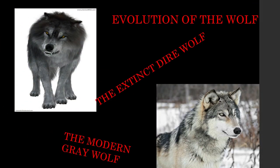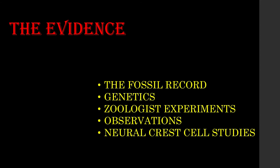The wolf evolved from previous ancestors, as demonstrated in the previous slide, using the same biological process of small changes over time as studied in microevolution. Please note, as you look at this picture, how different the extinct dire wolf is to our modern grey wolf. There are differences, and these differences can be explained by looking at how change occurs in the gene pool — and in this video we have looked at how change occurs, and it does not involve magic. Let us now summarise the evidence contained within this video for the evolution of the dog from an extinct wolf, looking at the fossil record, genetics, zoological experiments, observations, and those neural crest cell studies.